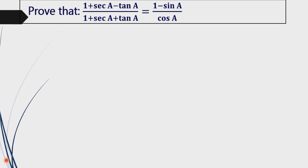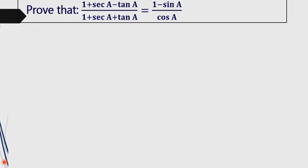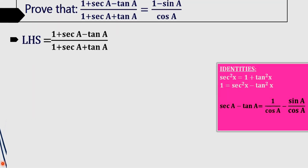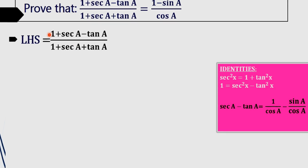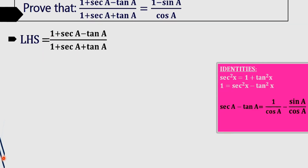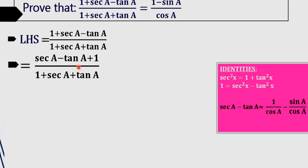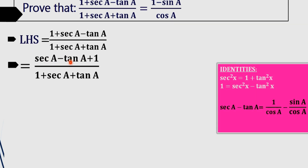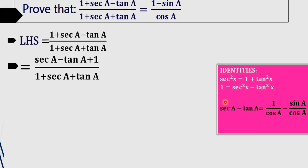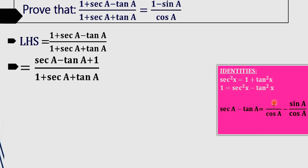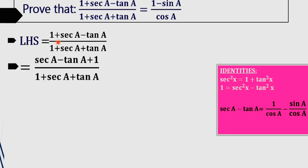To prove this, we first take the LHS. As a first step, we rearrange the term as csc A minus tan A plus 1. The peculiarity of csc A minus tan A is that csc A minus tan A equals 1/cos A minus sin A/cos A, which gives (1 minus sin A) divided by cos A — that is our RHS.